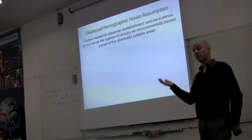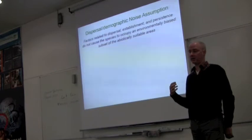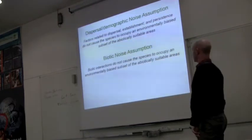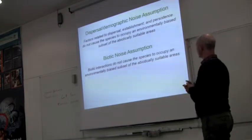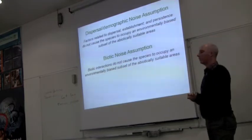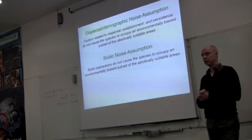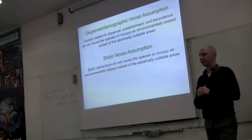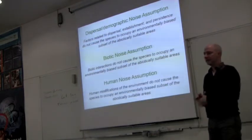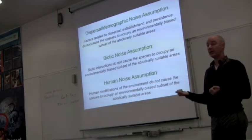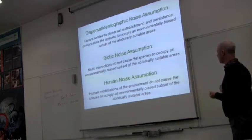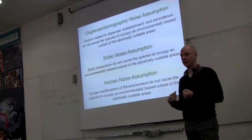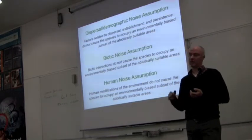The biotic noise assumption: We are assuming that biotic interactions do not cause the species to occupy an environmentally biased subset of the abiotically suitable areas. Exactly the same thing, but we're putting biotic factors as this possible culprit that could cause this problem. And then I pulled humans out because it's important to think about us differently so we won't forget about us. We assume that human modifications of the environment do not cause the species to occupy an environmentally biased subset of the abiotically suitable areas in our study region.